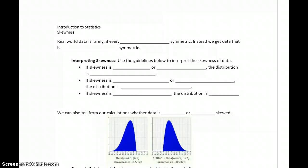However, we rarely ever see that. Whenever we consider real-world data, it's rarely, if ever, perfectly symmetric. Instead, we get data that we can refer to as approximately symmetric. So something close to that symmetric pattern, even if it's not perfectly symmetric. So we'll probably never get that value of zero for skewness, but we can assign some range of values that will help us interpret our result.